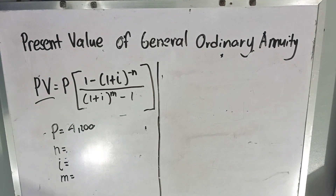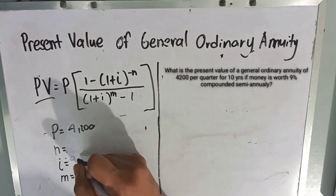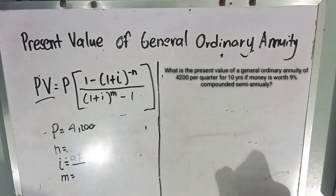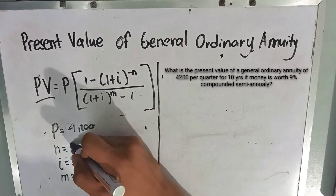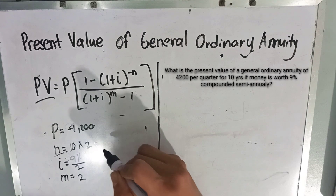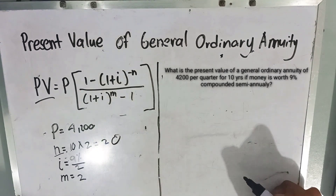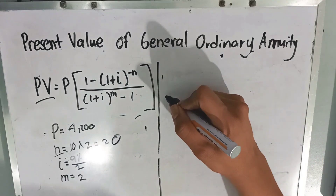Now let's have another example of finding the present value of a general ordinary annuity. What is the present value of a general ordinary annuity of 4,200 pesos per quarter for 10 years if money is worth nine percent compounded semi-annually? Our rate I is nine percent divided by 2 (semi-annually), and our total compounding periods N is 10 times 2 equals 20.